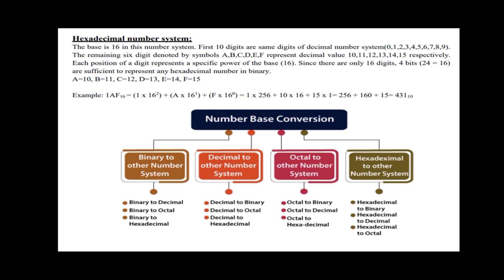For hexadecimal example 1AF: 1 into 16 raise to 2, because place value is 2, plus A — which is 10 — into 16 raise to 1, plus F — which is 15 — into 16 raise to 0. The result is 431 base 10.